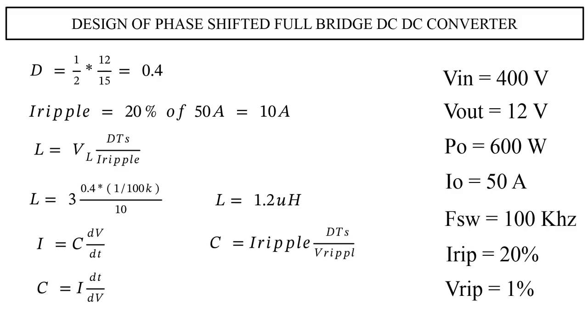So value of C will become Iripple times DTS divided by voltage ripple. Here Iripple and DTS we have already calculated. Now we need to calculate the voltage ripple. Vripple is 1% of output voltage, that is 1% of 12 volts, which is 0.12 volts.